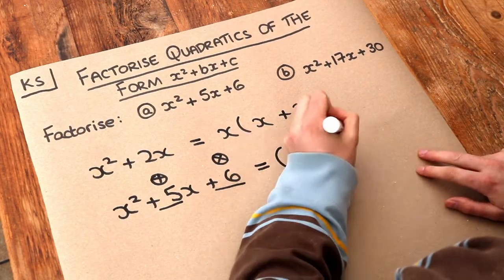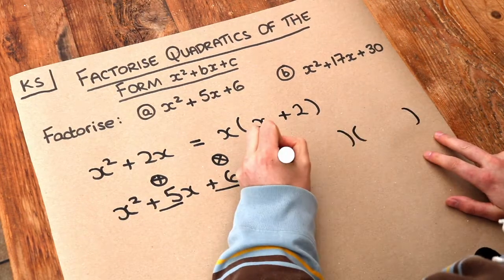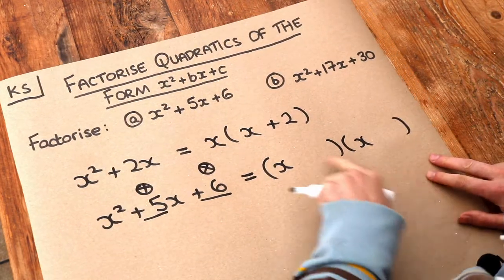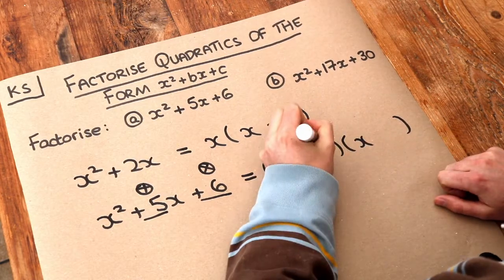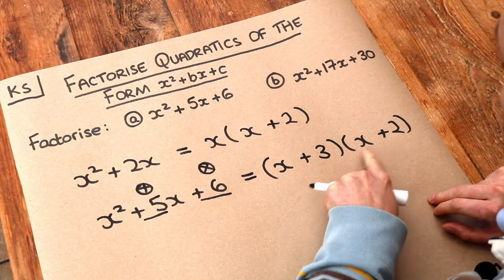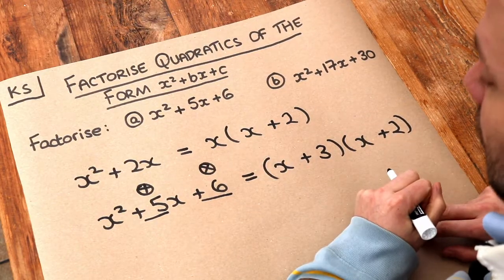So what we then do is we have two brackets, put x at the start of each of them and those two numbers you found, the 3 and the 2, you put them into these brackets here. So we have plus 3 and plus 2. It doesn't matter if they go the other way around, you could have x plus 2 times x plus 3. That would mean exactly the same thing.